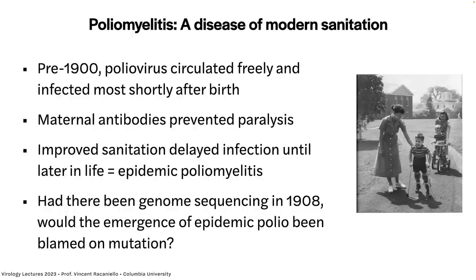With modern sanitation, kids were no longer immediately infected — they weren't infected until after their mother's antibodies waned a couple of years later. Now you have big collections of susceptible kids. When the virus enters them — boom — you have an epidemic. That is why we call it a disease of modern sanitation. Sanitation is good, but in this case it delayed infection and we didn't know that. If we'd had genome sequencing in 1908, we might have incorrectly concluded that genomic differences between epidemic and non-epidemic strains caused the epidemics — but the real answer was a change in population immunity patterns.